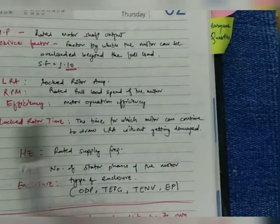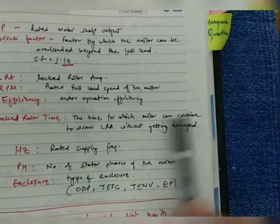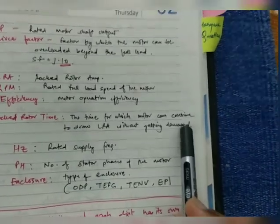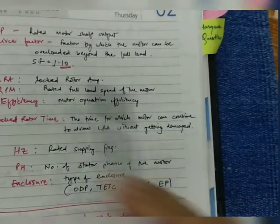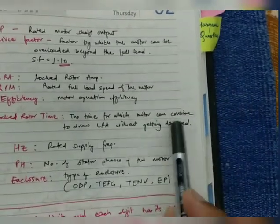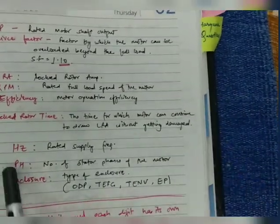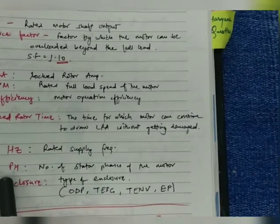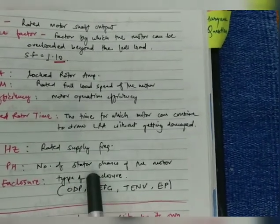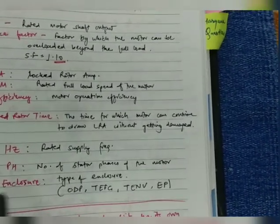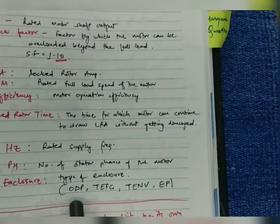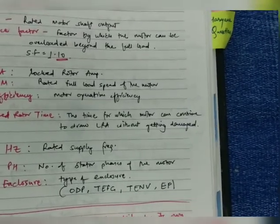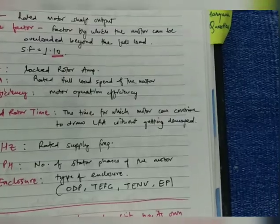Locked rotor time is the time for which the motor can continue to draw LRA without getting damaged — how long it will continue to draw locked rotor amps without damage. Then hertz is the rated supply frequency. PH is the number of phases of the motor. And enclosure describes the different types of enclosures — ODP, EFG, TENV, or EP — related to what I mentioned about IP, ingress protection.